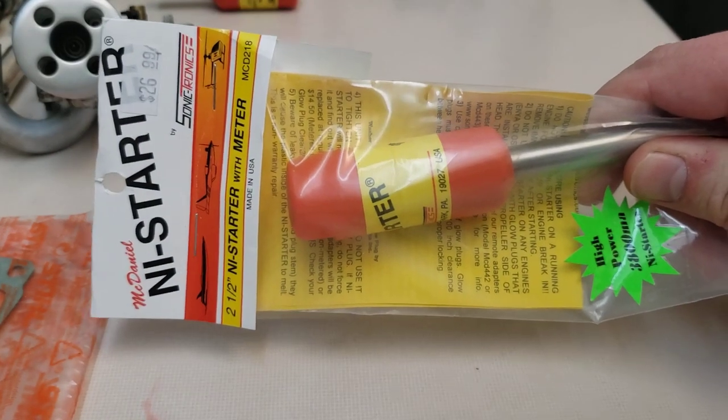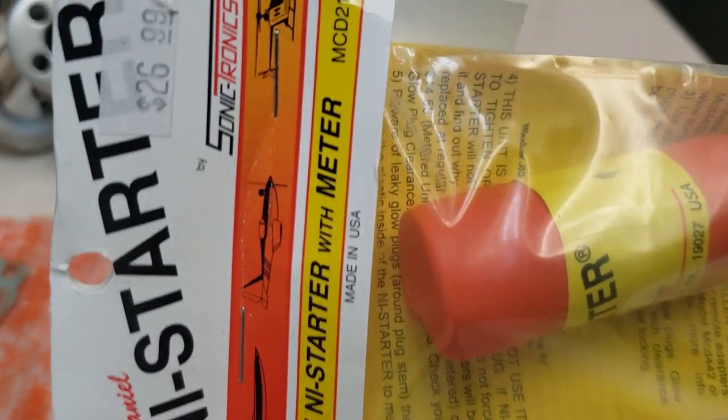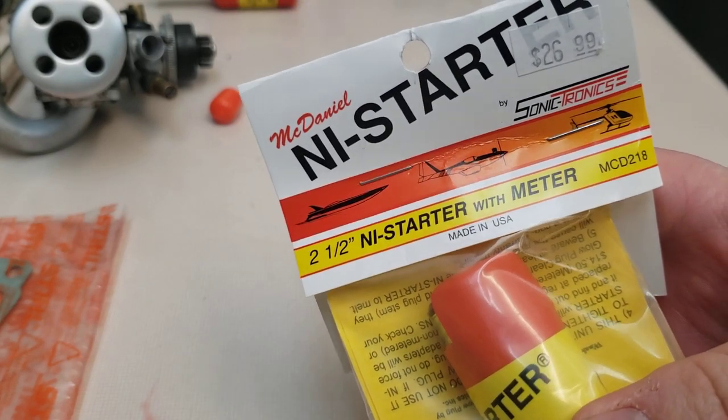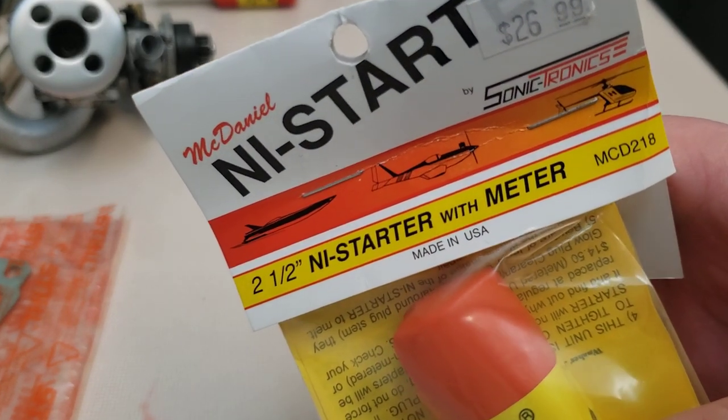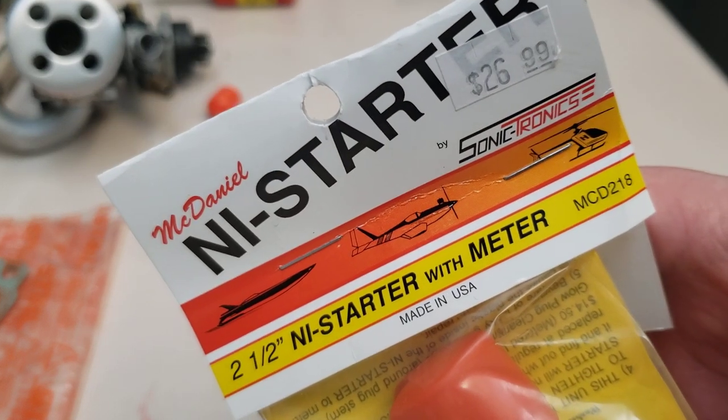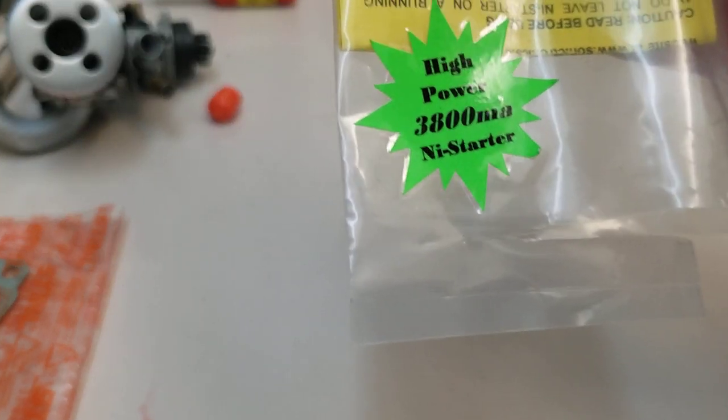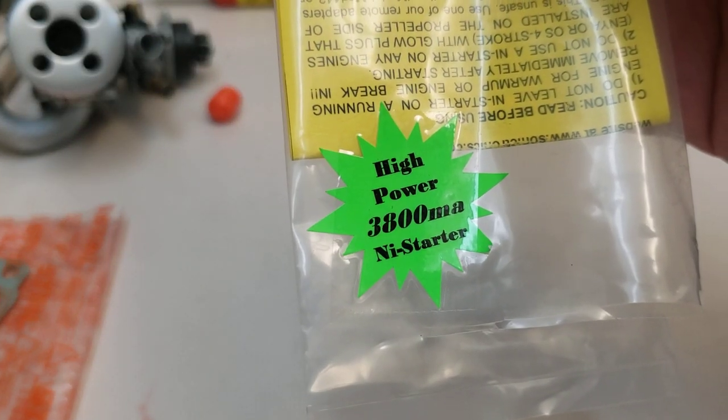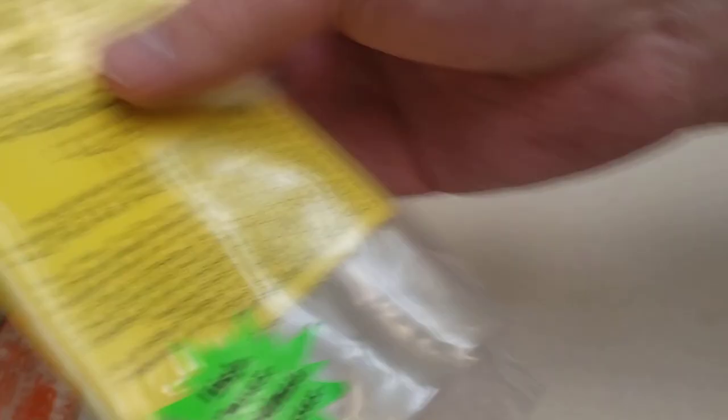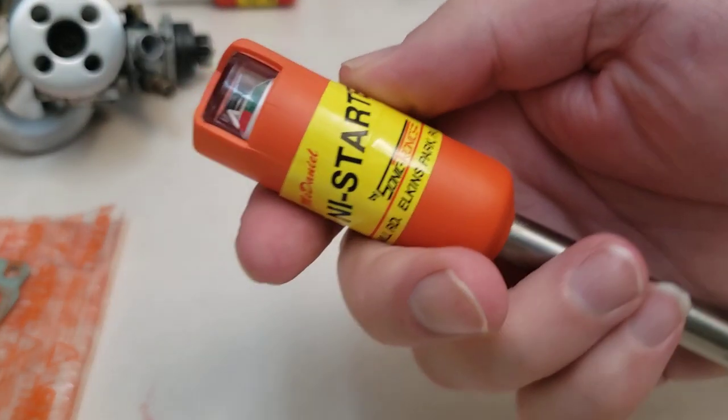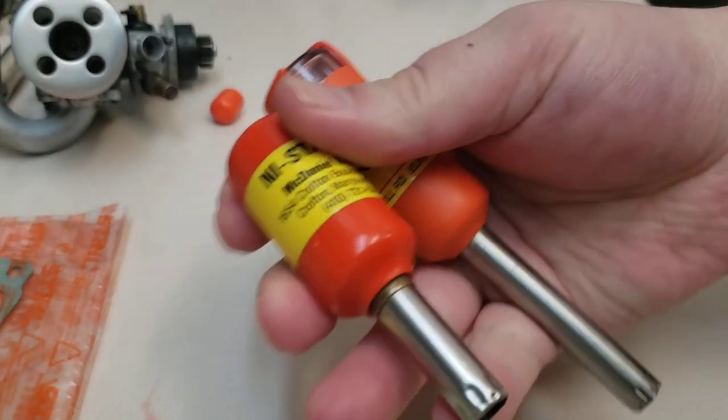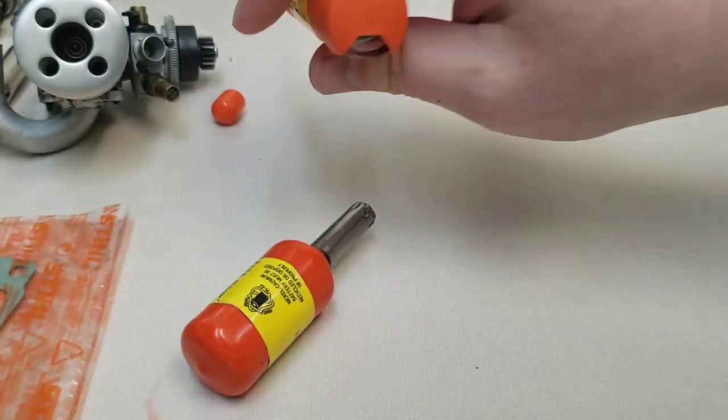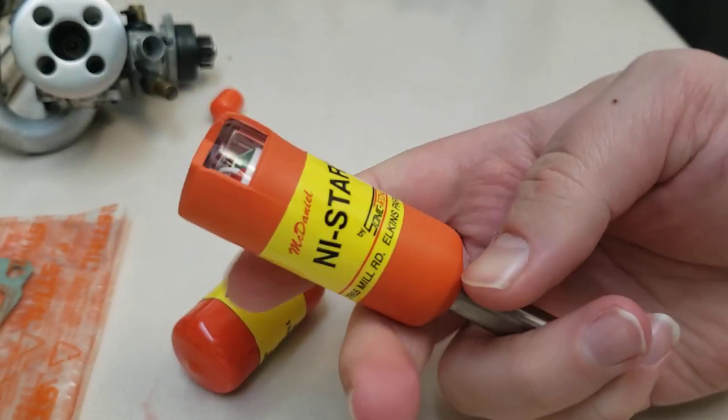So I ordered a new one and this one, here's all the product information there. And here it is. So you can see it says high power 3800 milliamp hour. So we can see the 1.5 versus the 2.5, a little bit longer so it's nice for those deep tall cylinder heads that some people might have. It is twist lock exactly the same.